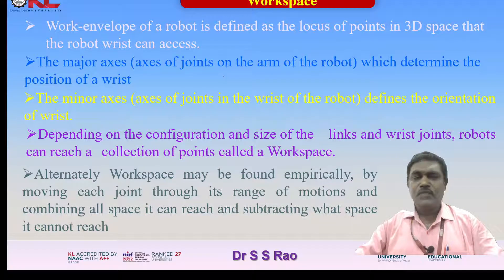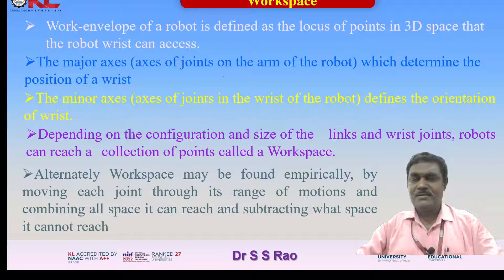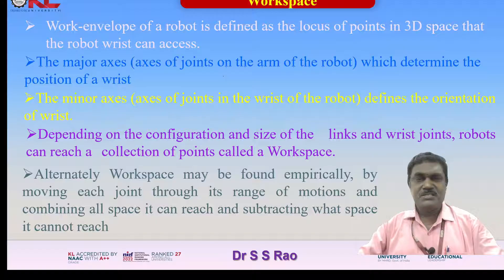Alternatively, workspace may be found empirically by moving each joint through its range of motions, combining all the space it can reach, and subtracting the space it cannot reach — this is known as the workspace.